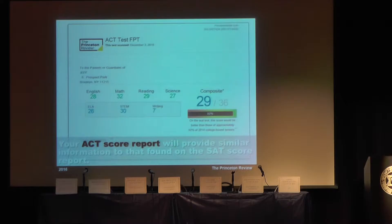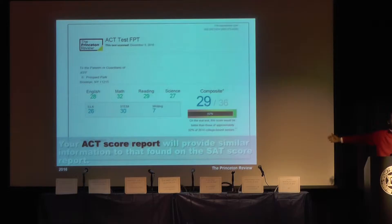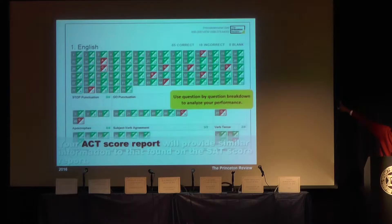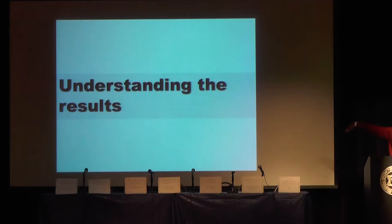Now the ACT report — very similar information. This report is not an actual ACT; you took an actual PSAT and then a Princeton Review practice ACT. The information you get from both is about the same. The ACT is scored slightly differently — the top ACT score is 36. Percentile is a good thing to know about; this student who got a 29 was at the 92nd percentile. The right/wrong/blank breakdown is on the second page — green means right, red means wrong, and if there's a letter underneath the red, that's the letter the student put down. There's also subcategory breakdown showing what types of questions you're getting right or wrong.